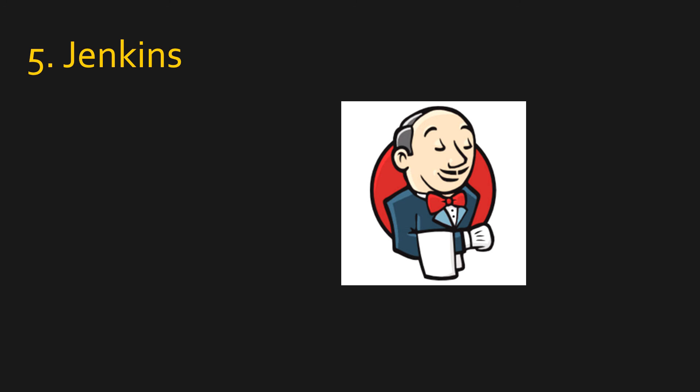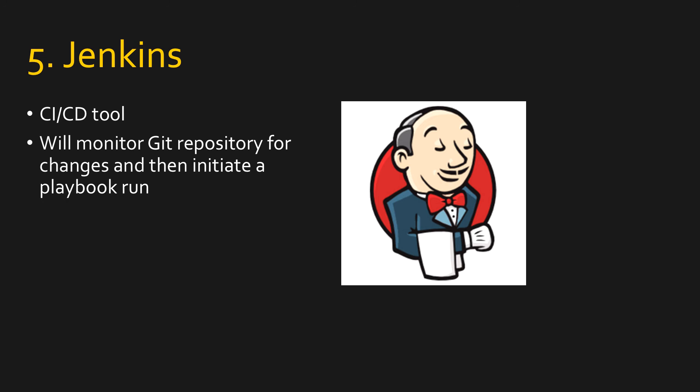Another very popular tool which is gaining a lot of traction is Jenkins. Jenkins is used for continuous integration and continuous deployment — CI/CD. You can have your code in a Git repository, and any changes to that code will be monitored by Jenkins, which will then take that code and initiate a playbook run, keeping everything moving and continuously deploying on your network. It's still not really taking up big time, but it's in use. One of the best things about Jenkins is it does have the best logo.